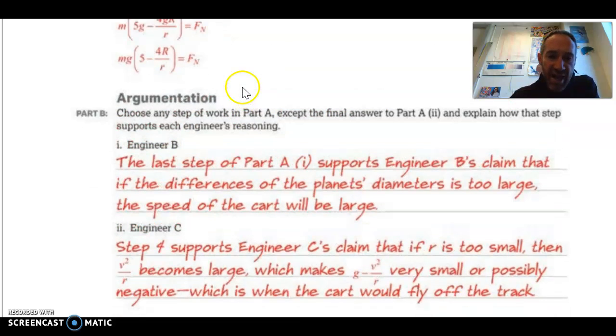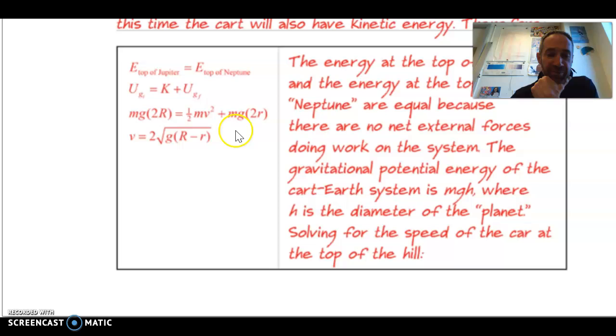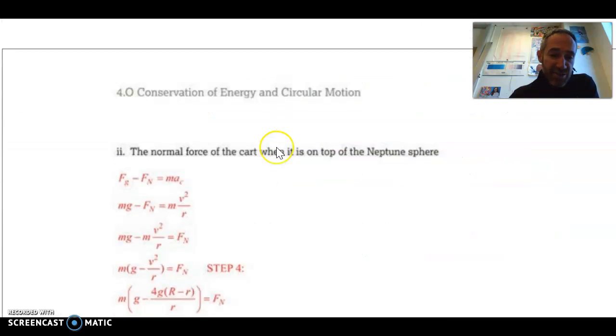Now, it says, choose any step to work in, a step of work in Part A except the final answer and explain how that step supports each engineer's reasoning. So there are choices here, but the College Board chose the last step of Part A supports Engineer B's claim that if the differences of the planet's diameters is too large, the speed of that cart will be large. So going back to that, yeah, this is basically what I was saying before too, that this is the energy of the top of Jupiter. This is the energy at the top of Neptune. And see, right here is the difference between those two. So that's what he said, and that's what it was.